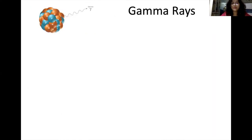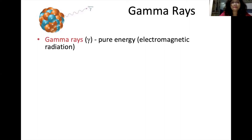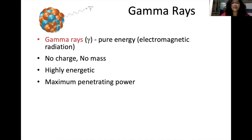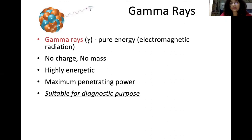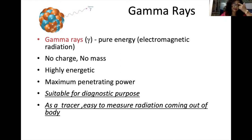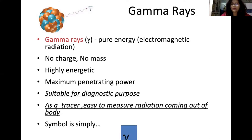Gamma rays are not particles but pure electromagnetic radiation — pure energy rays. They have no charge and no mass, which is why they are highly energetic and have maximum penetrating power. Hence they are suitable for diagnostic purposes and are even used as tracers. As they are easy to measure, these radiations can be easily detected when they come out of the body. Most of the radiation used in diagnostic purposes are gamma rays.